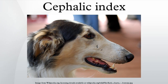The cephalic index is used in the categorization of animals, especially breeds of dogs and cats. A brachycephalic skull is relatively broad and short. Dog breeds such as the Pug are sometimes classified as extreme brachycephalic.